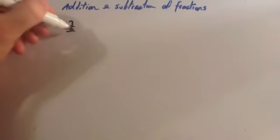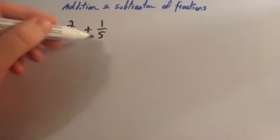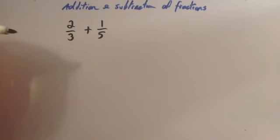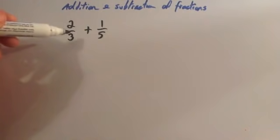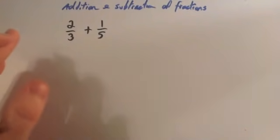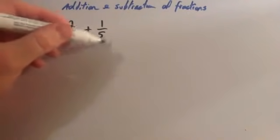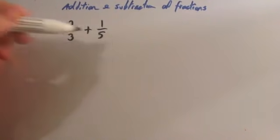For instance, if I had two-thirds plus one-fifth, I would want to make the two denominators — the denominator is the word for the bottom number — to be the same. What I want to do is find a common multiple of three and five. I would strongly recommend watching two videos: the one on common multiples and the other on equivalent fractions. A common multiple of three and five would be fifteen, because fifteen is a number in the three times table and the five times table.